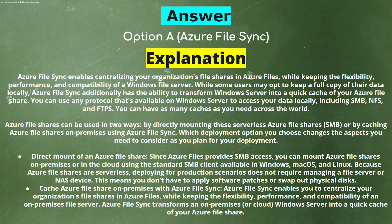Azure file shares can be used in two ways: by directly mounting serverless Azure file shares, or by caching Azure file shares on-premises using Azure File Sync. Option one — direct mount of an Azure file share: since Azure Files provides SMB access, you can mount Azure file shares on-premises or in the cloud using the standard SMB client available in Windows, macOS, and Linux. Because Azure file shares are serverless, deploying for production scenarios doesn't require managing a file server or NAS device, so you don't have to apply software patches or swap out physical disks.